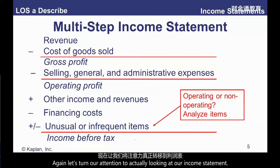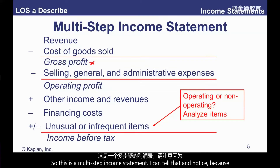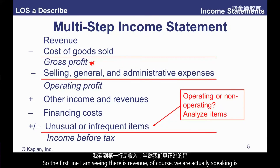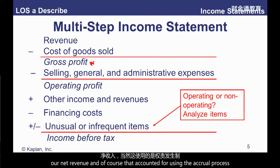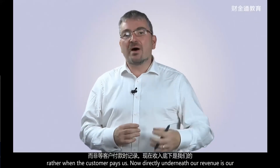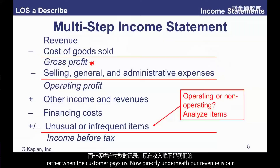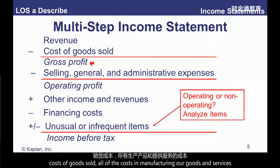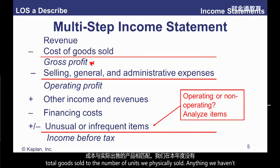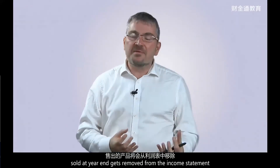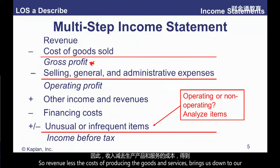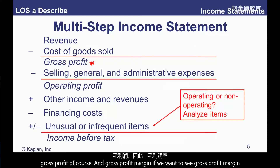Let's look at an actual income statement. This is a multi-step income statement — I can tell because gross profit is shown on the face. The first line is revenue — strictly, net revenue — accounted for using the accruals process. The revenue figure is not the same as cash collected from customers; we record revenues when they're earned rather than when the customer pays. Directly underneath is cost of goods sold, applying the matching concept — matching total cost of goods sold to the number of units physically sold.